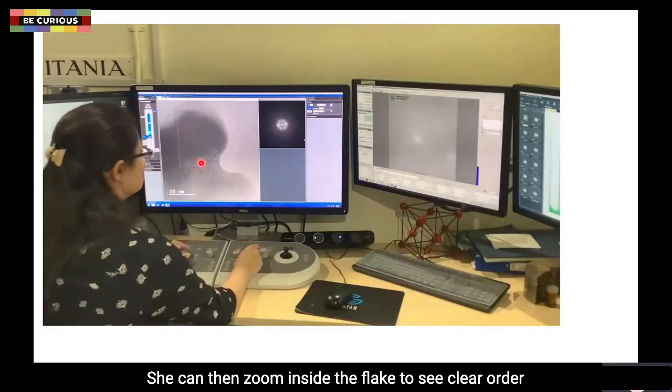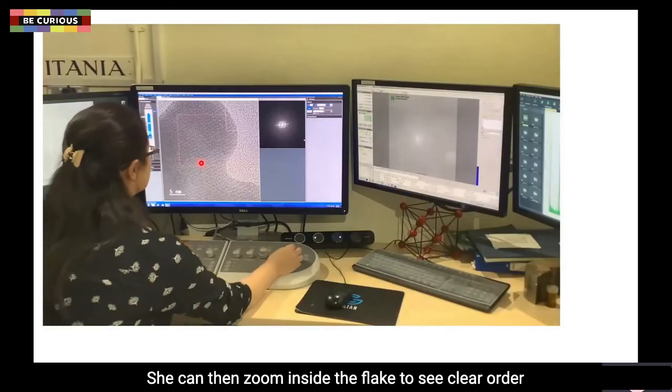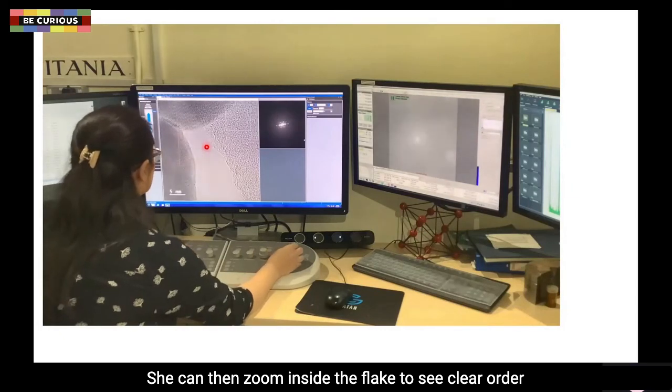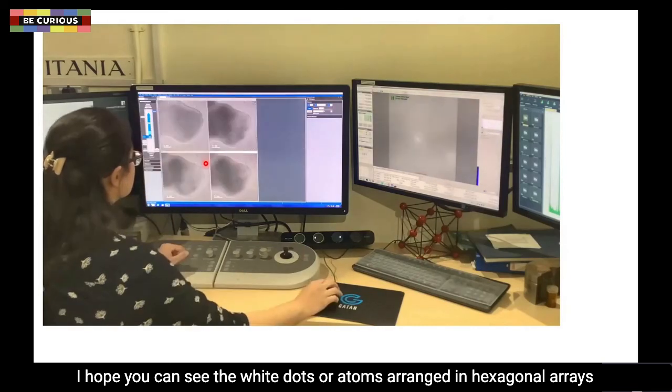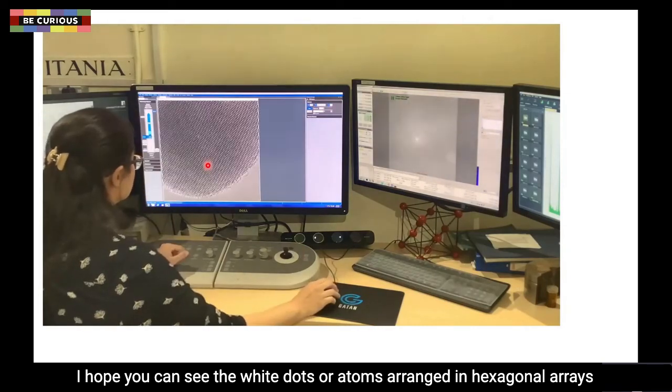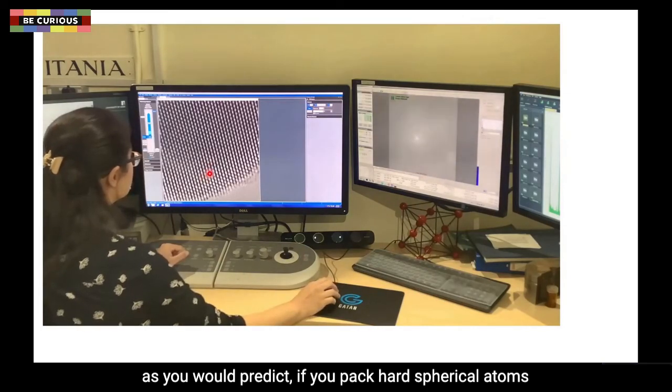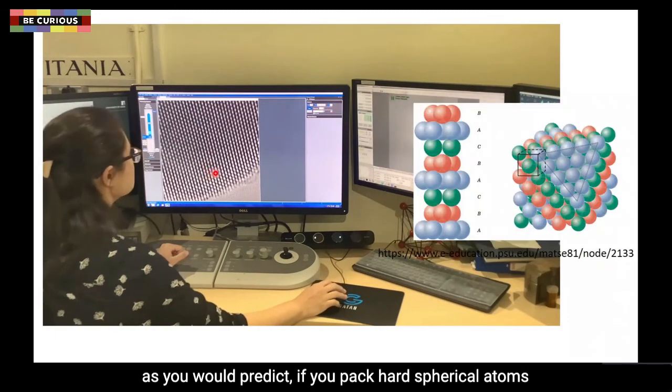She can then zoom inside the flake to see clear order. In fact, when we zoom in a bit further, I hope you can see the white dots or atoms arranged in hexagonal arrays, as you would predict if you pack hard spherical atoms together as closely as possible.